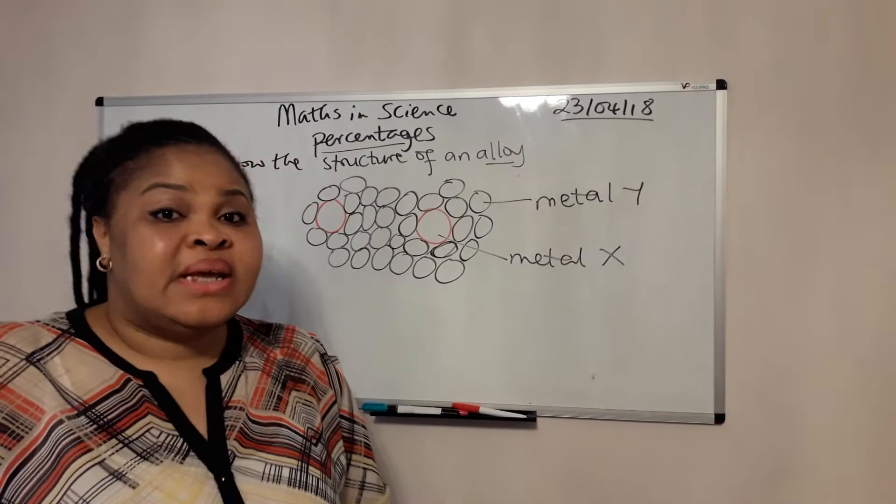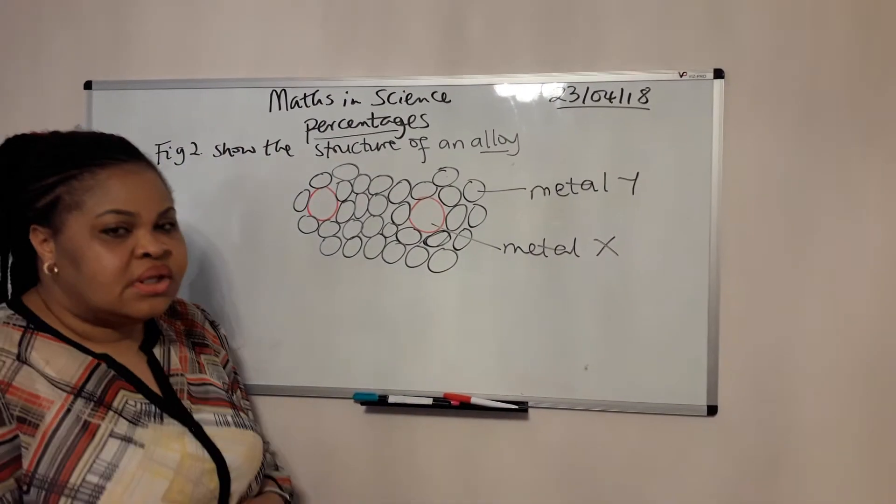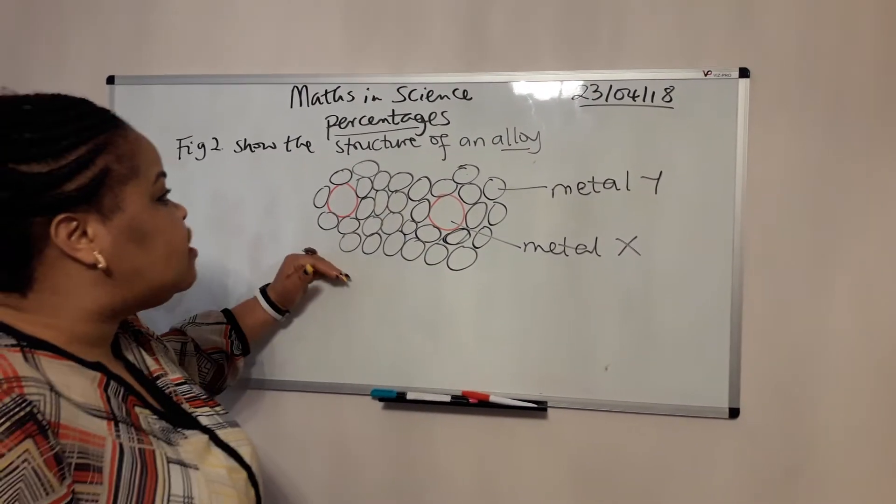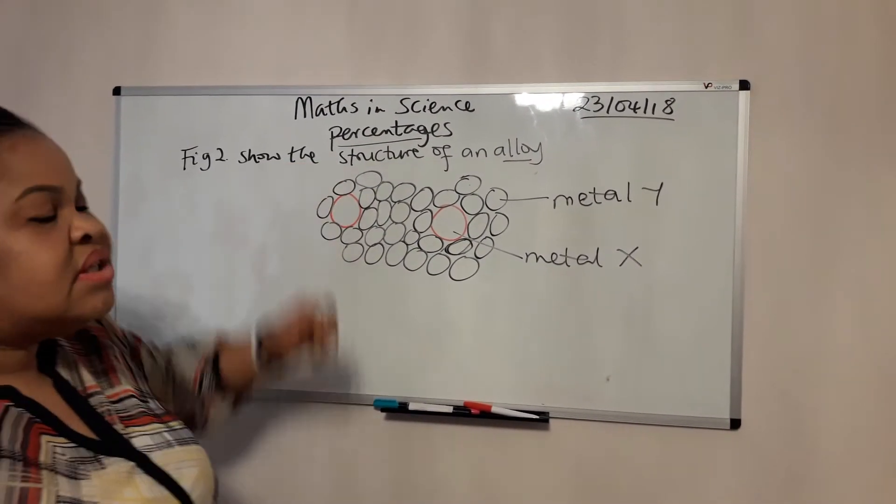That's how we also have gold-plated and silver-plated metals that we use for jewelry and things like that. So that's an alloy quickly, but this particular question that I'm focusing on is in terms of how to work out the percentage.